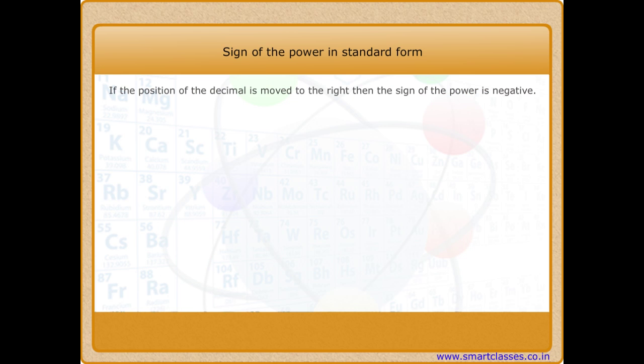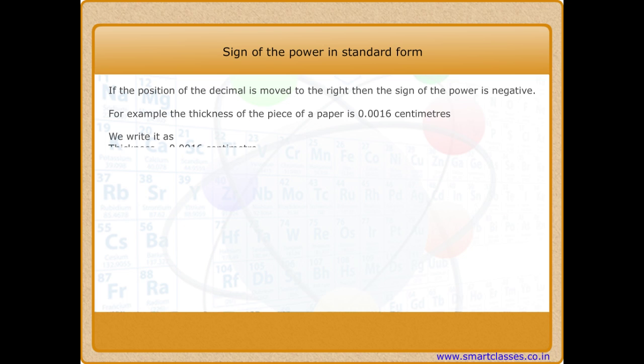If the position of the decimal is moved to the right, then the sign of the power is negative. For example, the thickness of a piece of paper is 0.0016 centimeters. We write it as thickness equals 1.6 times 10 raised to power minus 3 centimeters.